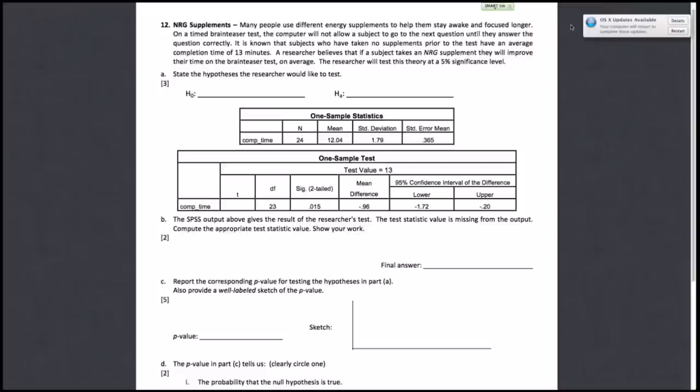Number 12, energy supplements. Part A asks you to state the hypotheses that the researcher would like to test. We'll start with the null hypothesis. Circle the numbers of interest. The question tells you that subjects who have taken no supplements have an average completion time of 13 minutes. So the null hypothesis is mu equals 13.